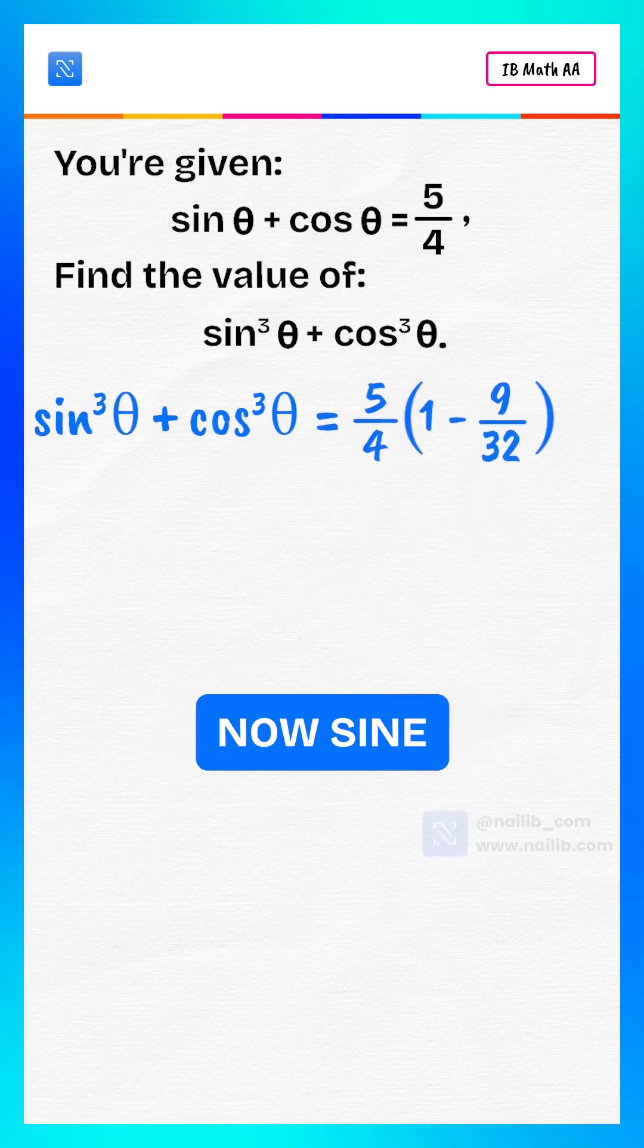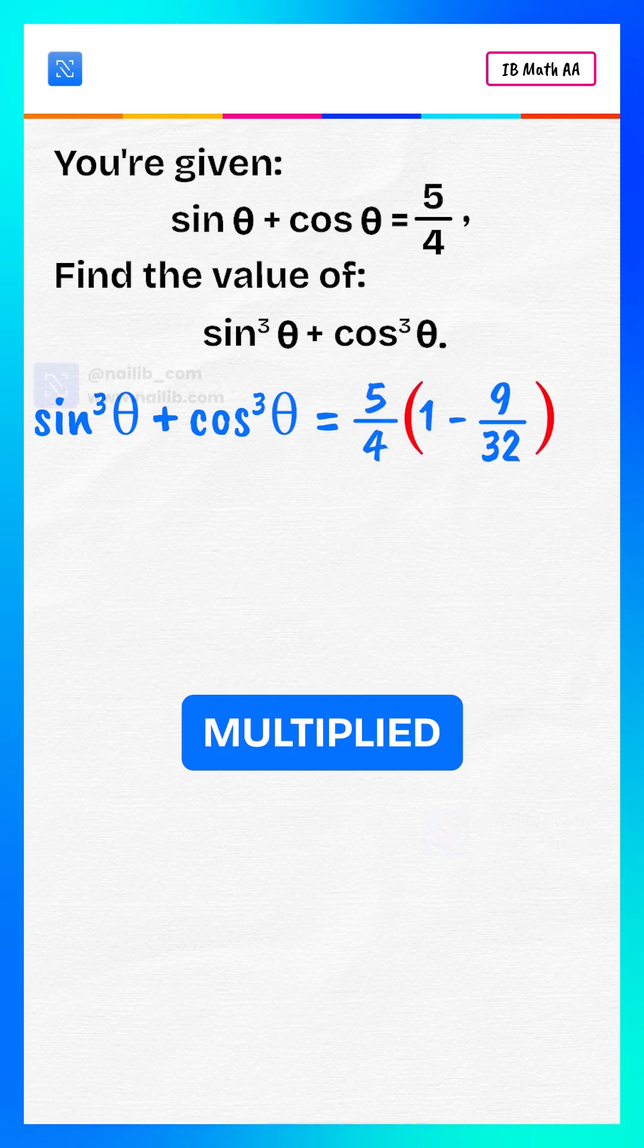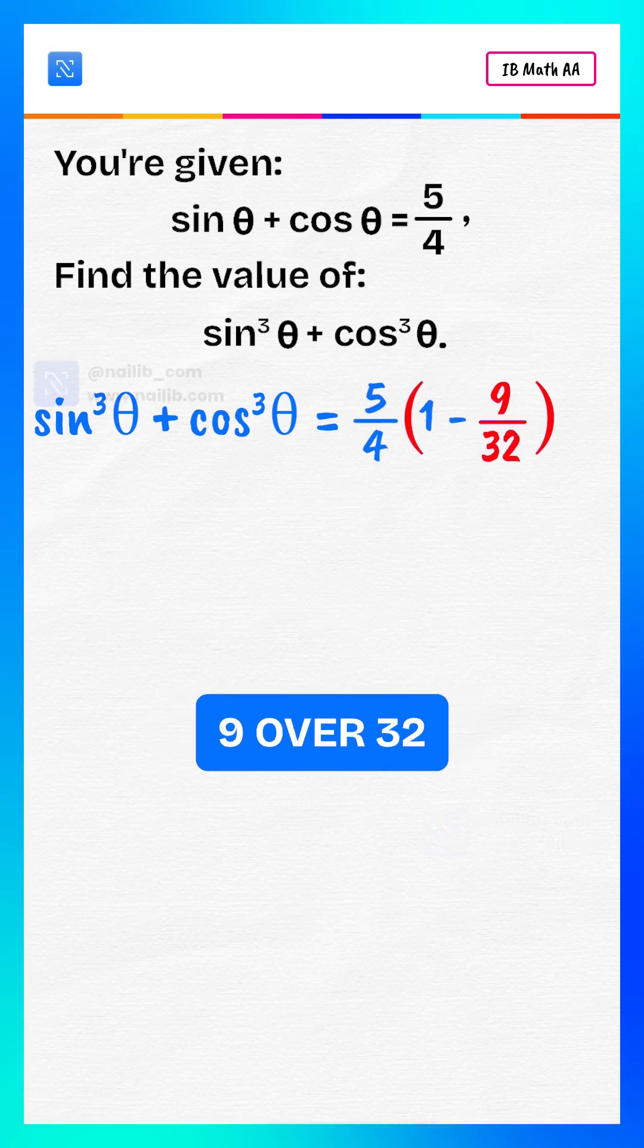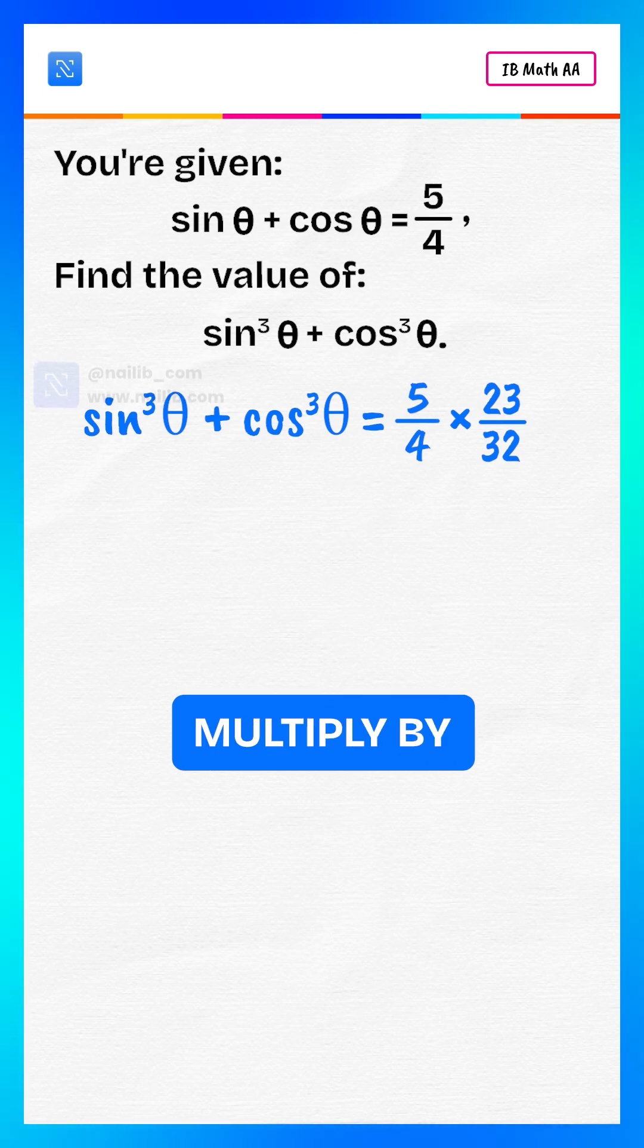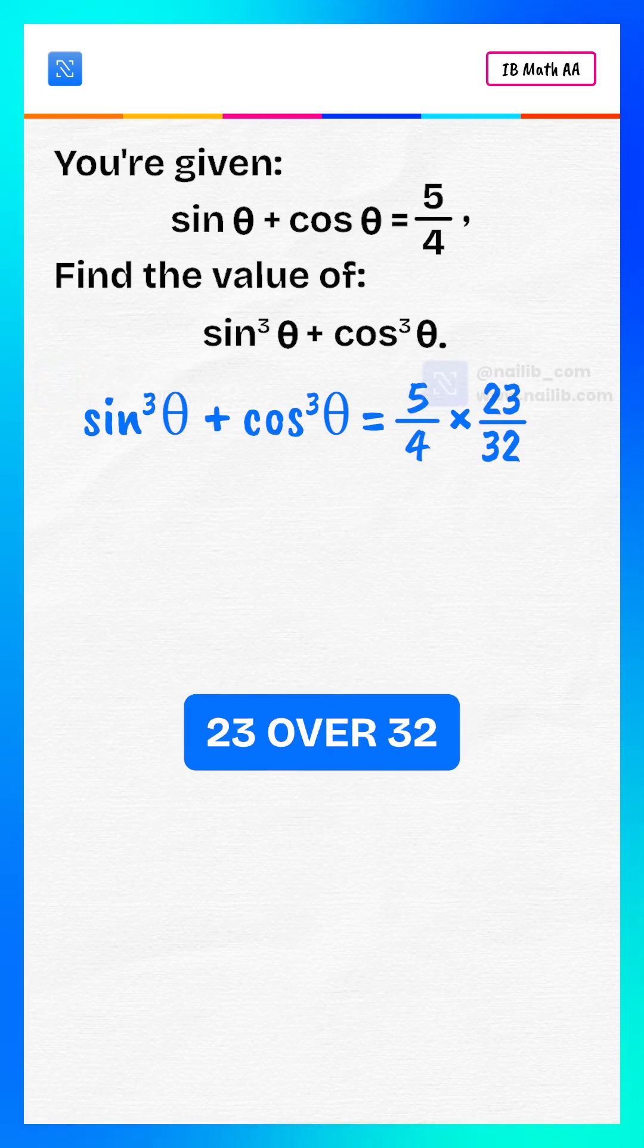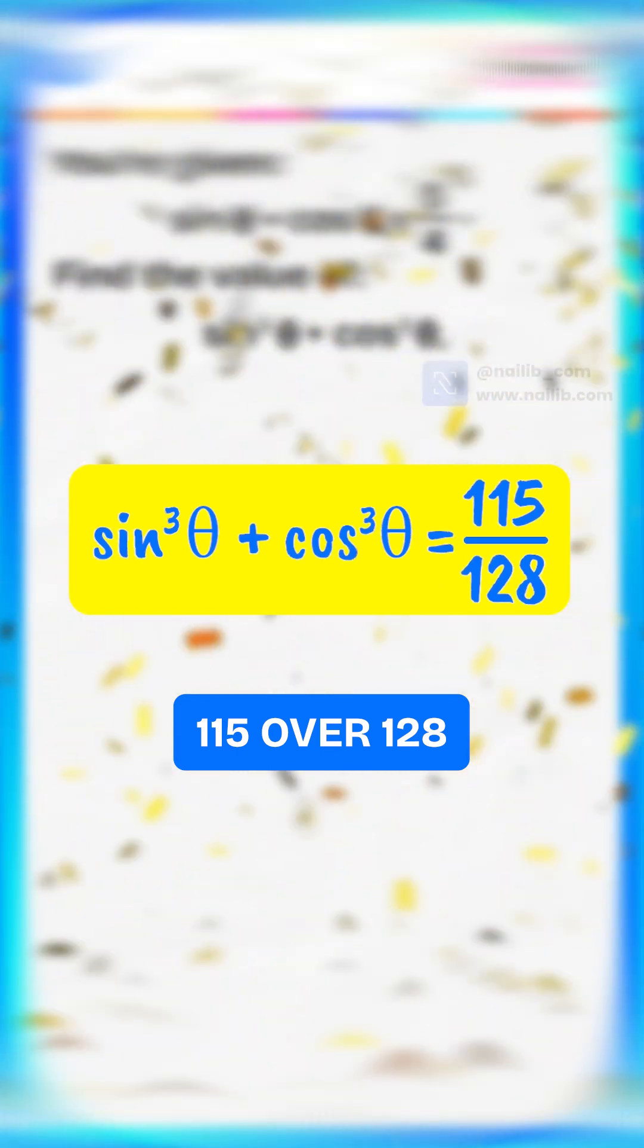Substitute back. Now, sin³θ + cos³θ = 5/4 × (1 - 9/32). That gives 5/4 × 23/32. So, the final answer is 115/128.